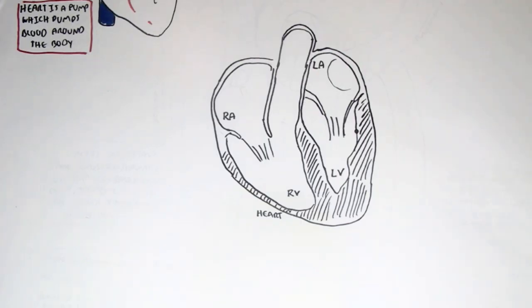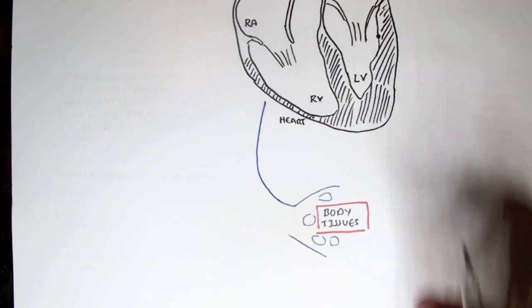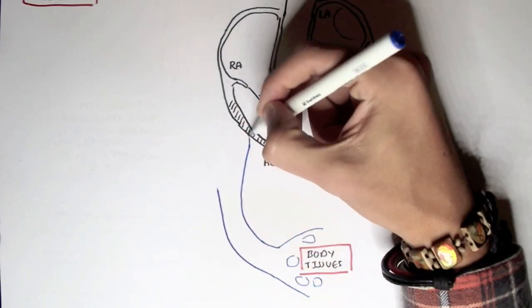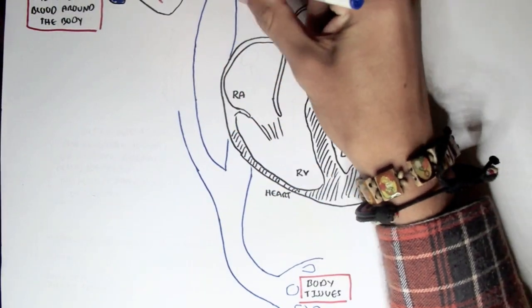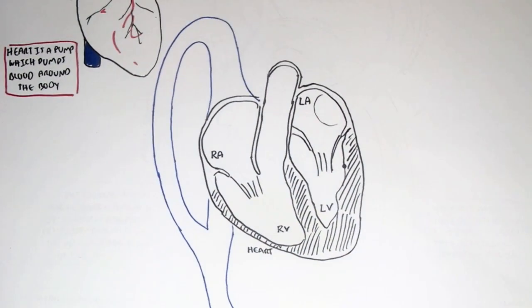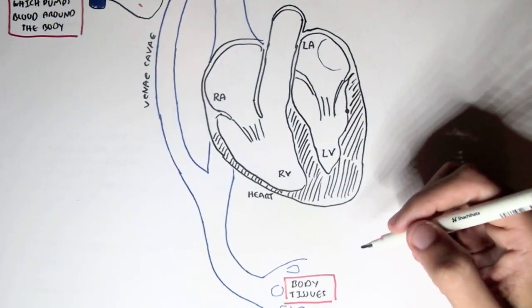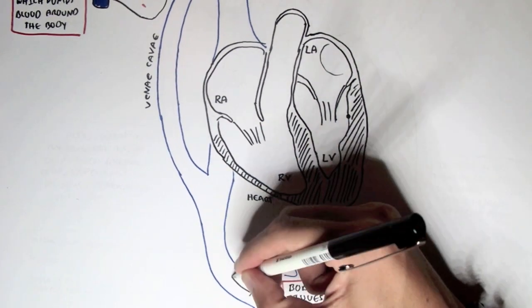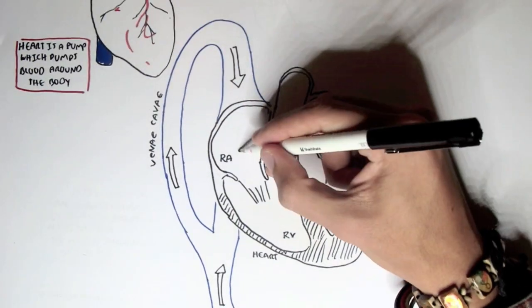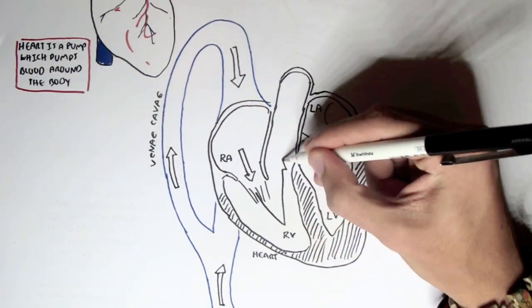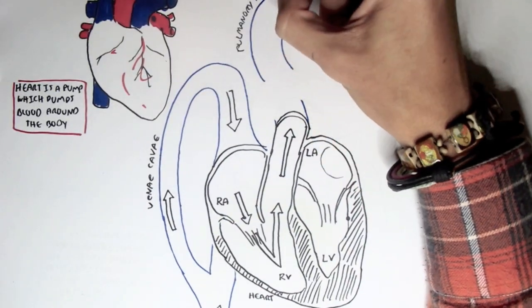After oxygen has been used by the body tissues, the blood supply will be de-oxygenated — it will be low in oxygen and will have higher concentrations of carbon dioxide. This de-oxygenated blood supply will then travel back into the heart through the vena cava and enter into the right atrium. The blood will then go into the right ventricle, which will pump it out through the pulmonary artery towards the lungs, where it will be re-oxygenated.